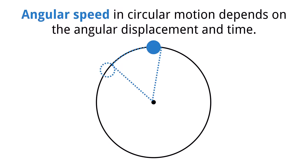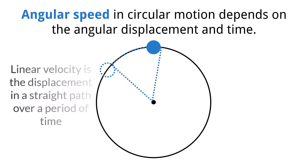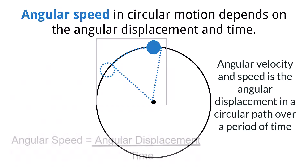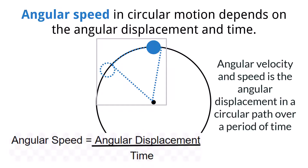When objects undergo circular motion, our understanding of motion must be changed from a linear understanding to a circular understanding. In linear motion, the velocity of an object is dependent on the displacement of the object in a straight line and the time it took to reach that point. In circular motion, the speed of the object is dependent on the angular displacement and the time it takes to cover that displacement. The angular displacement is the angle through which an object moves in its circular motion, measured in either degrees or radians — most commonly radians. The angular speed is the angular displacement divided by the time for that displacement to take place, measured in degrees per second or radians per second, and is represented by the Greek letter omega.